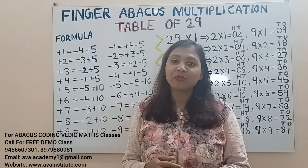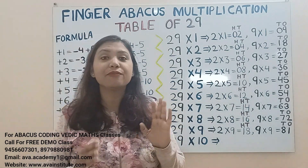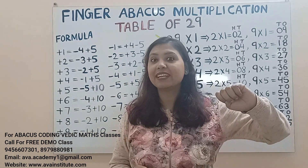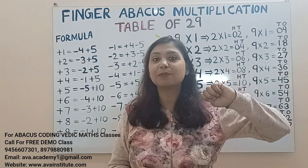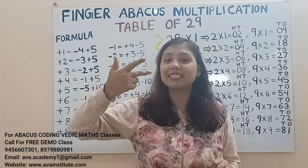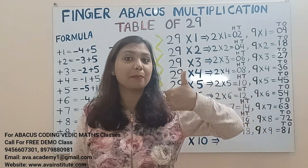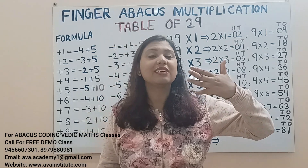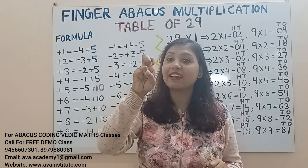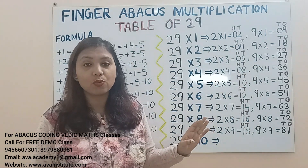Now let us quickly revise the framework in finger abacus. The right hand represents ones place and the left hand represents tens place. In the right hand, the value of the thumb is 5 and fingers are 1 each. In the left hand, the value of the thumb is 50 and the value of fingers are 10 each. In the right hand we also represent hundreds.